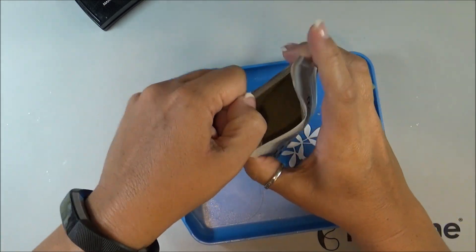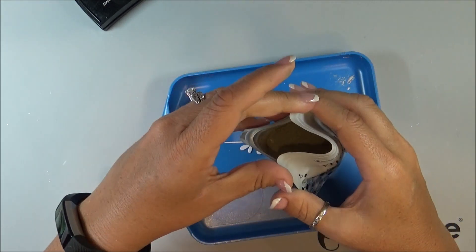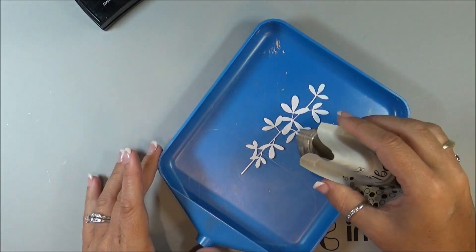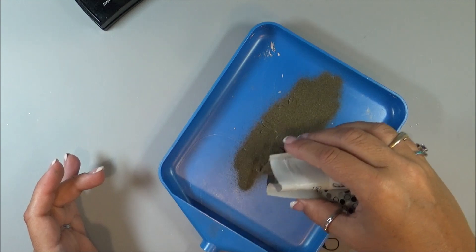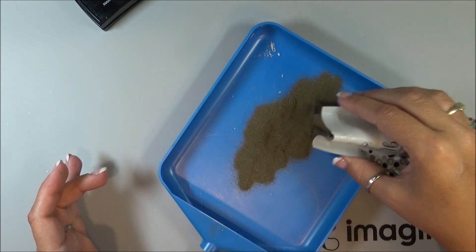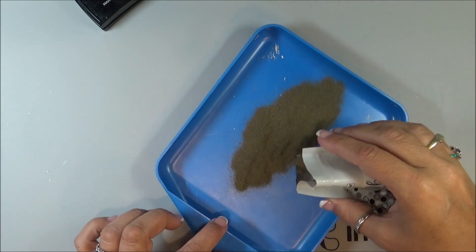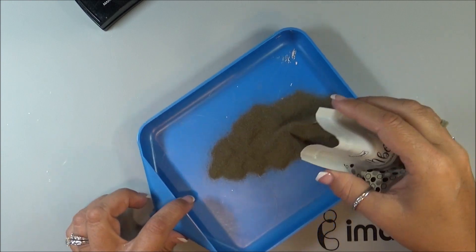And then I'm just going to pour it right over the top. I actually want to pour it pretty thick, because I'm going to dip it back into the embossing powder that I have in the tray.